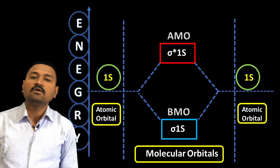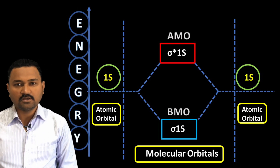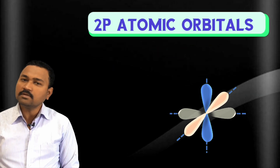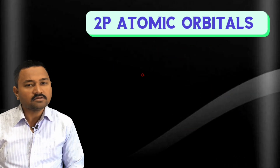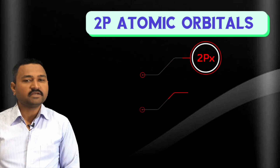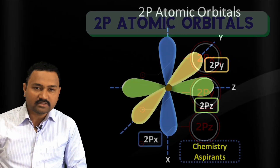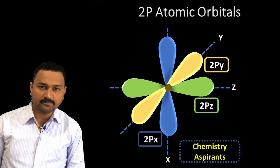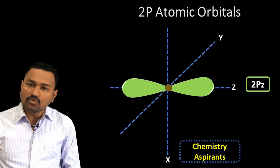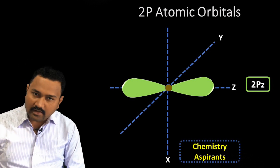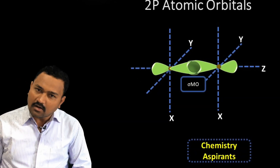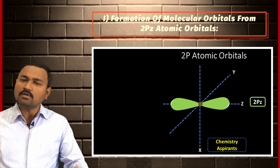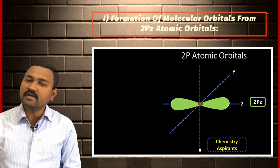Now let us consider the formation of molecular orbitals from the p atomic orbital, specifically the 2p atomic orbital. There are three subsets of the 2p orbital, represented as 2px, 2py, and 2pz, which are directed along the Cartesian coordinates x, y, and z respectively, as shown in the diagram. The 2pz atomic orbital is present along the internuclear axis, so overlapping of the 2pz atomic orbital takes place along the internuclear axis.